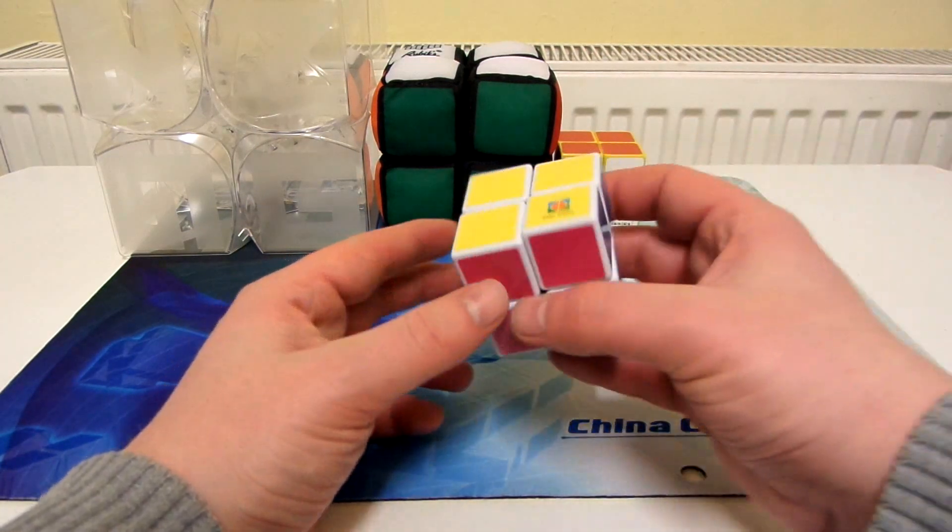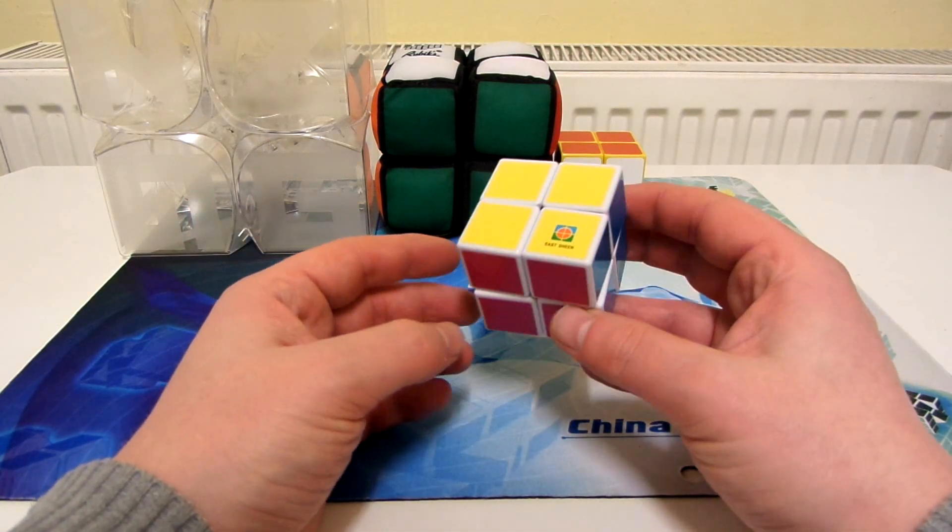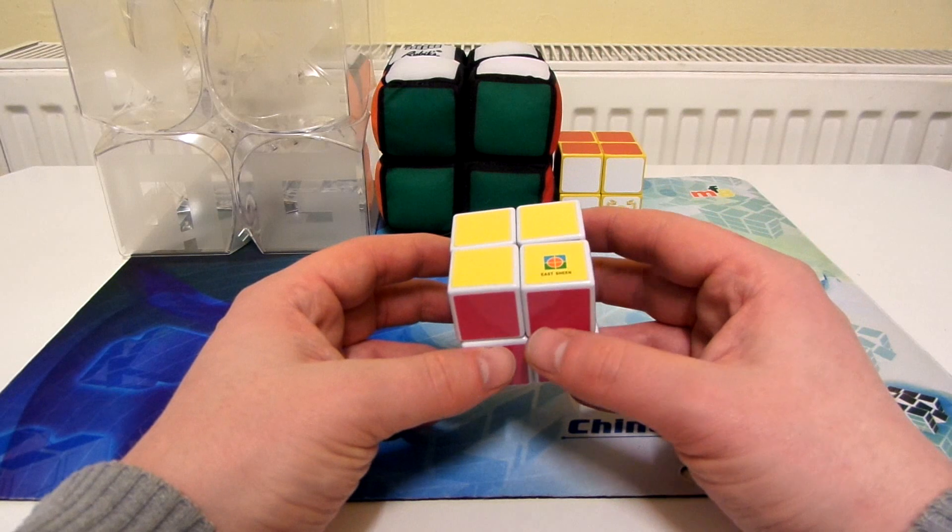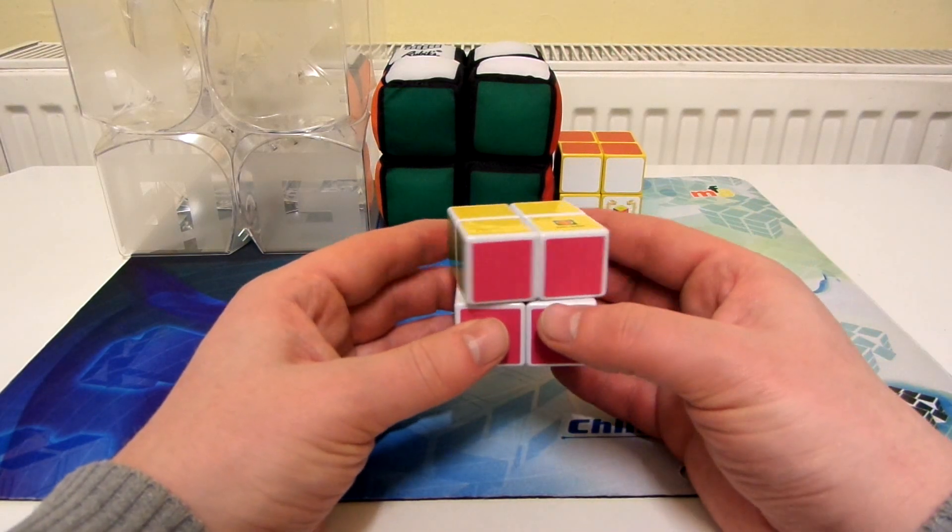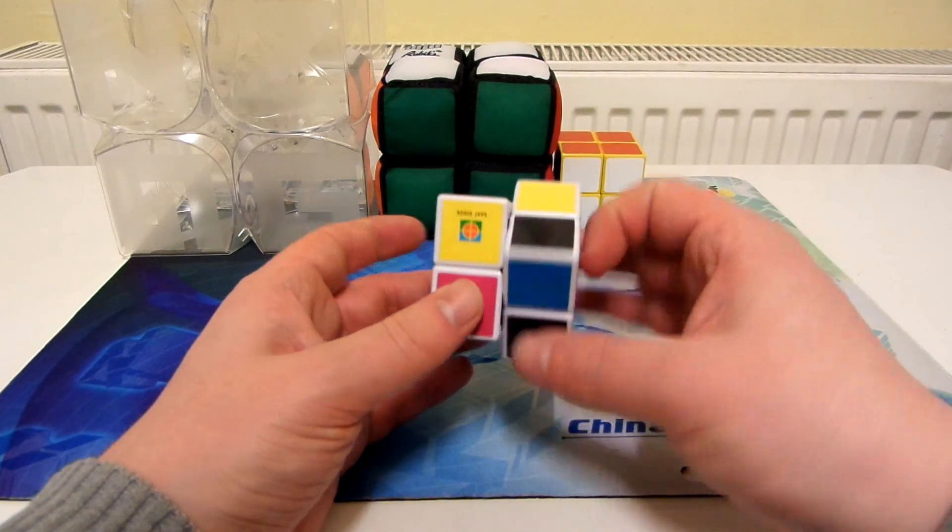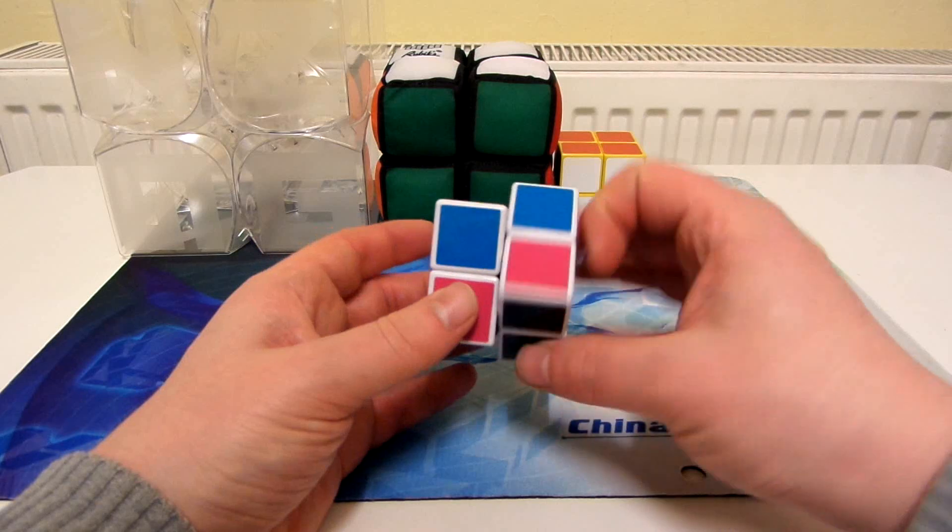Next up, we have an East Sheen 2x2. These used to be good 2x2 speed cubes back in the day, I think, in the late 2000s. They barely have any corner cutting at all, so you've got to have really good cube control with this so it doesn't lock up.